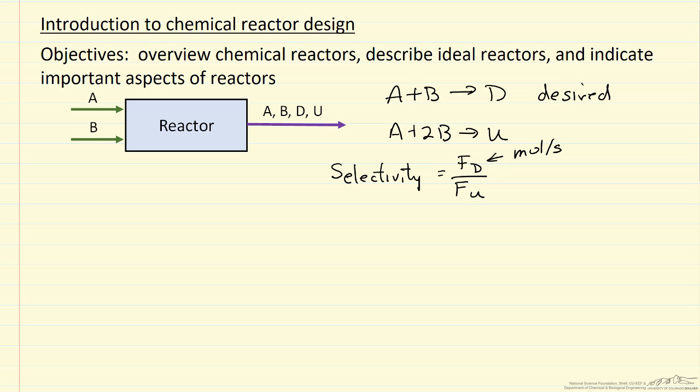If it were a closed reactor or a batch reactor, it would be the number of moles of D over the number of moles of U. This has units of moles, just total moles of product D.